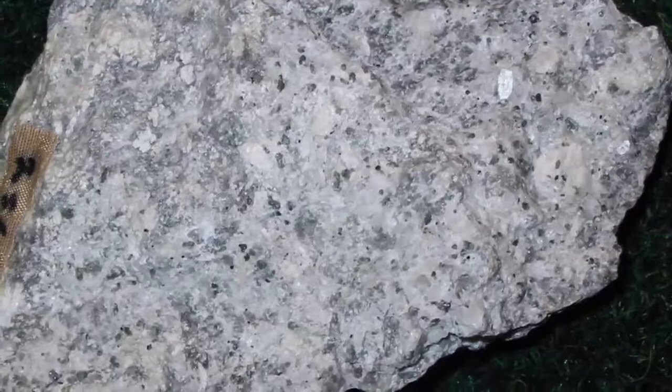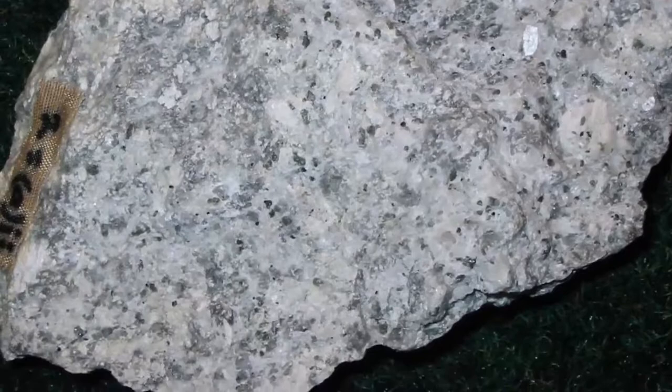If a rock is almost monomineralic, it may be named after the dominant minerals — for example, quartzite dominated by quartz, marble by calcite or dolomite, serpentinite almost entirely made of serpentine, and the like. But most rocks contain three or more minerals. These minerals are listed with hyphens between them and placed in order of increasing modal percentage before the group name.